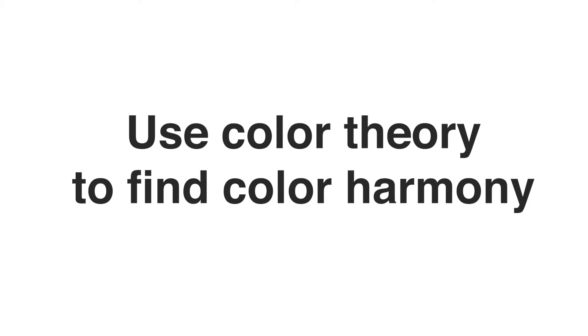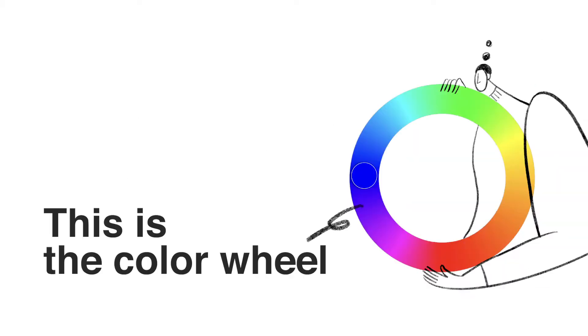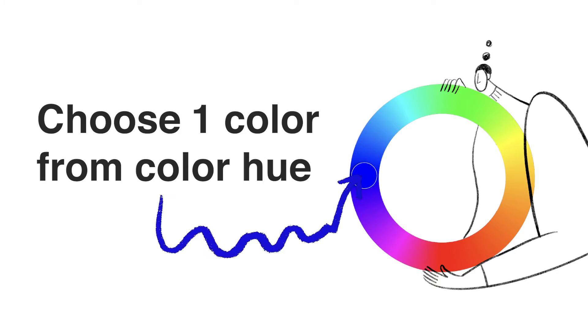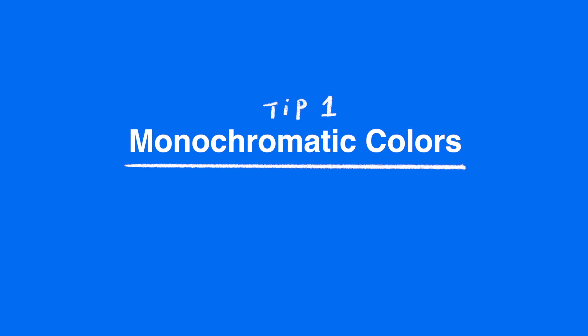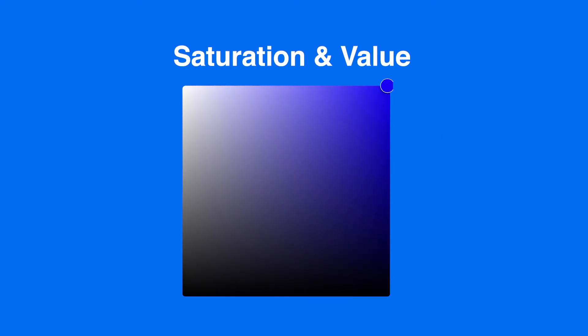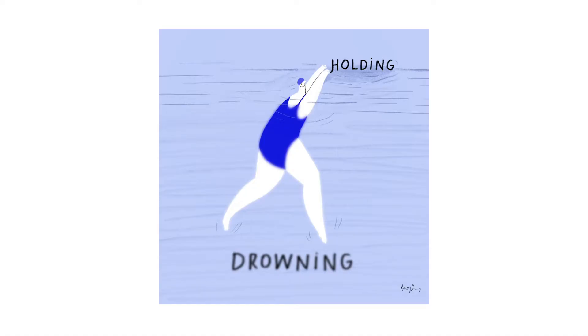First, use color theory to find color harmony. This is the color wheel. Choose one color that you want to use from a hue. The first tip is monochromatic colors — adjust the saturation and value to create the combination. This is the Procreate panel. I like to find combinations by increasing or reducing it. There is a curve in the middle that you can use to find colors too. You can get colors like this, and here's my drawing so you can see how it looks.